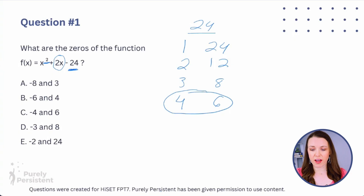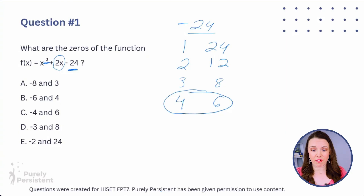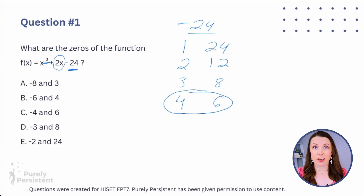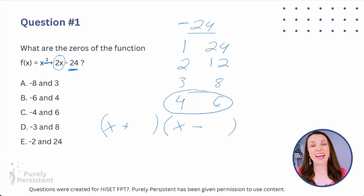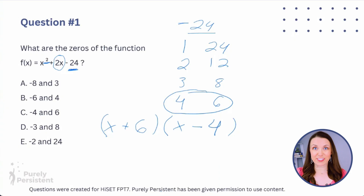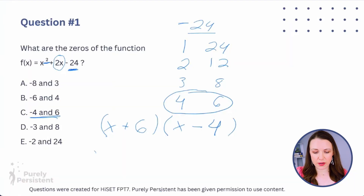Looking at 6 and 4: if I have a positive 6 and a negative 4 and add those together, I get positive 2. Since the constant is minus 24, that tells me I have one positive and one negative factor. The positive 2 tells me the larger number is the positive one. So I set up (x + 6)(x - 4). You might think that +6 and -4 are the answer, but they're not — we need to solve for x.